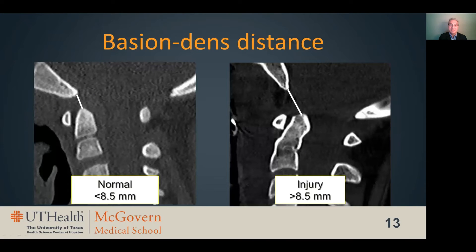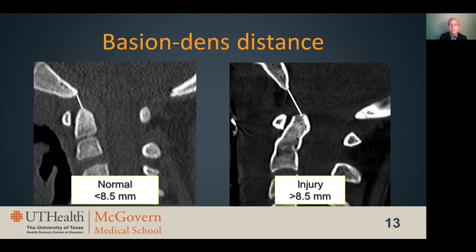The basion-dens distance is the distance from the basion to the tip of the dens. After the atlantooccipital distance, we found the basion-dens distance to be the next most accurate measurement for identifying cranial cervical injuries. Distances of 8.5 to 10.5 millimeters have been proposed as cutoff values, but based on results from our institution, I recommend using the lower cutoff of 8.5 millimeters, as a cutoff of 10.5 millimeters would miss a significant number of cranial cervical injuries.